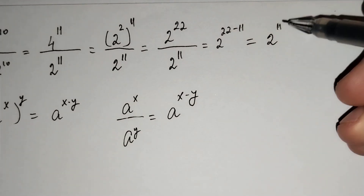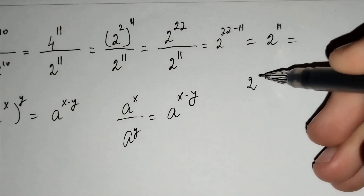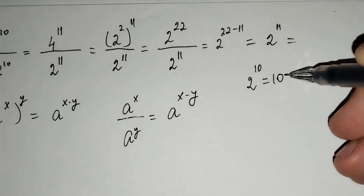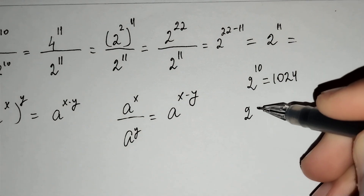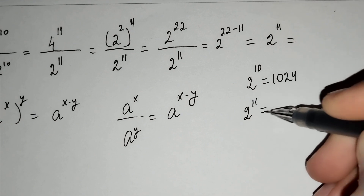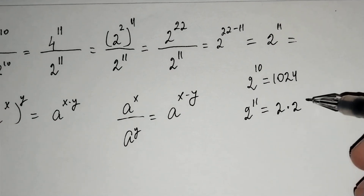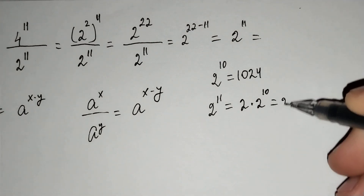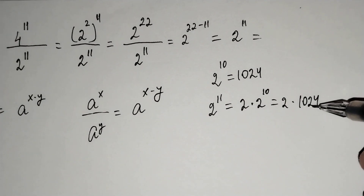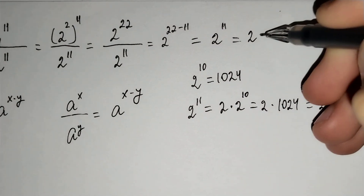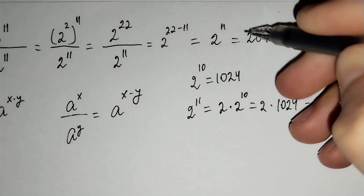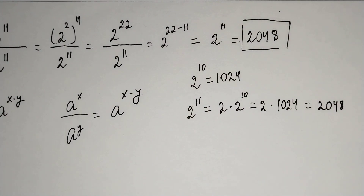And you know that 2 power 10 equals 1024, and 2 power 11 equals 2 times 2 power 10, which equals 2 times 1024, giving us 2048. So 2048 is our answer. Thanks for watching, don't forget to subscribe to my channel.